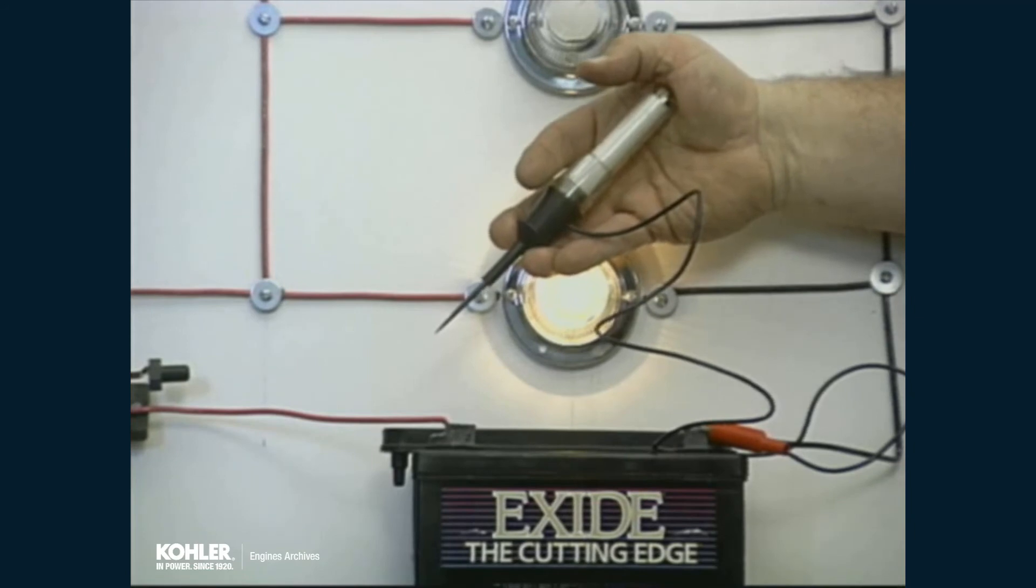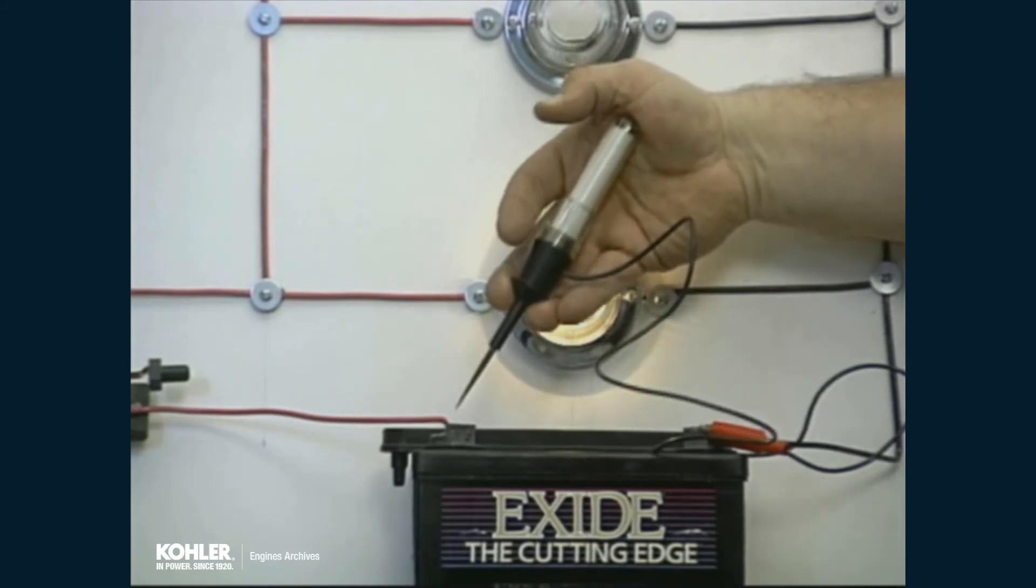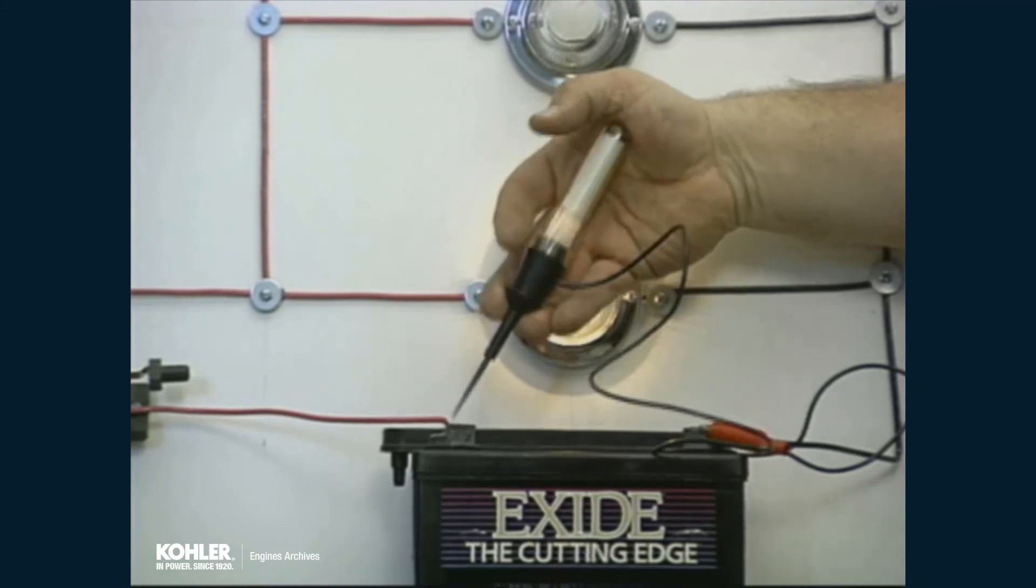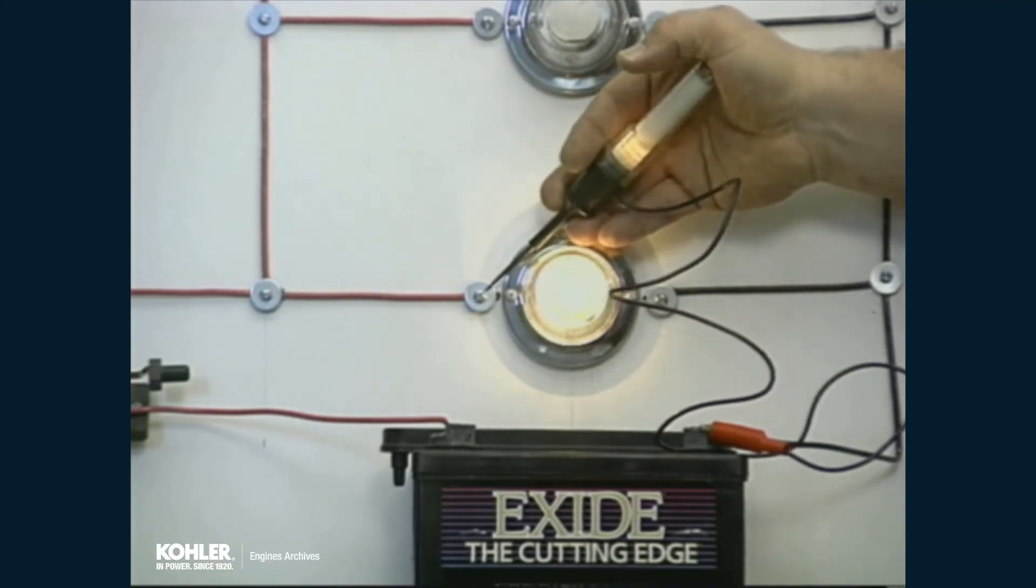If a voltmeter is not available, a test light can be used in the same way as a voltmeter, however with a lesser degree of accuracy. After testing and observing the brightness of the bulb when connecting directly across the battery, proceed with testing. A brilliant bulb is a good indication of a high voltage reading, and a dim glow from the bulb is an indicator of a low reading.